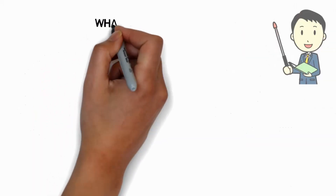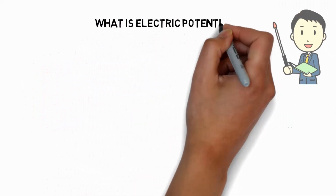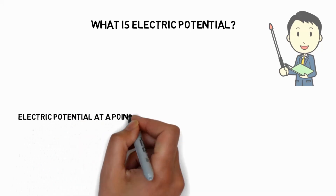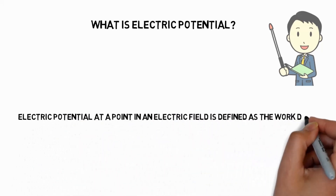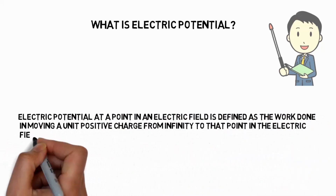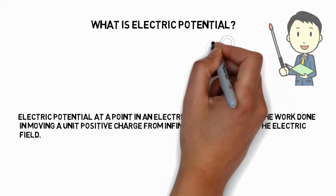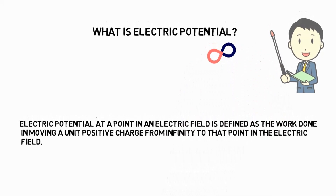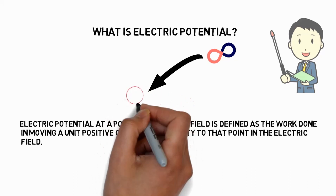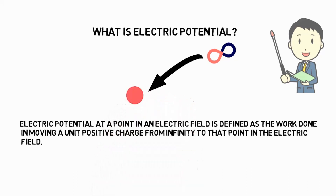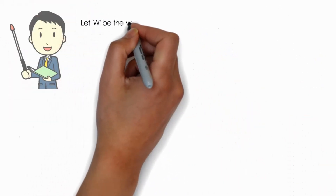Now let us define electric potential. Electric potential at a point in an electric field is defined as the work done in moving a unit positive charge from infinity to that point in the electric field. For example, inside a conductor, if a unit positive charge moves from infinity to a point A, then work is said to be done in moving that charge to point A.